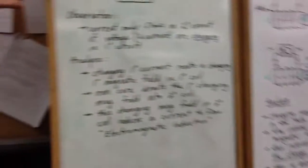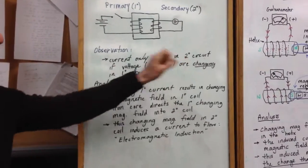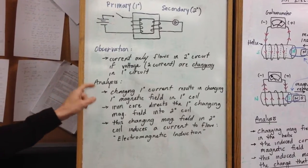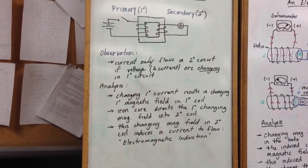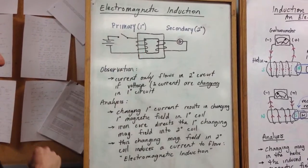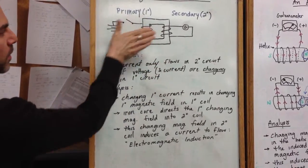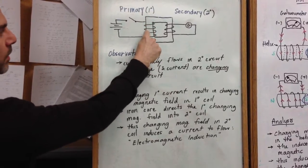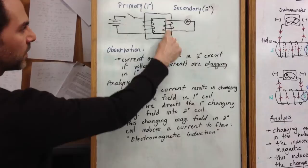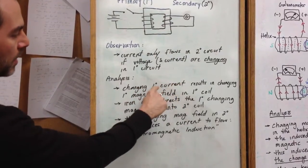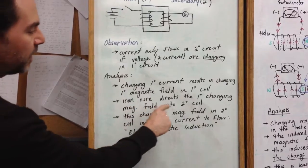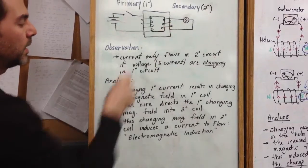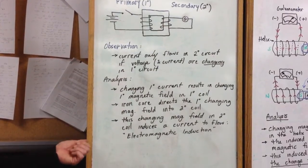So now let's wrap up with some observations back to the whiteboard here. What is going on? The current flows in the secondary circuit only if the voltage and the current are changing. So what is the analysis? You need a changing current in the primary circuit in order to get the magnetic field in the primary to change. Remember right-hand rule number two. If a current is flowing, there is a magnetic field in a helix. Well, the iron core sends that magnetic field around to this side so that the changing current in the primary results in a changing magnetic field in the secondary. That changing magnetic field induces a current to flow in the secondary, which we register with the galvanometer.